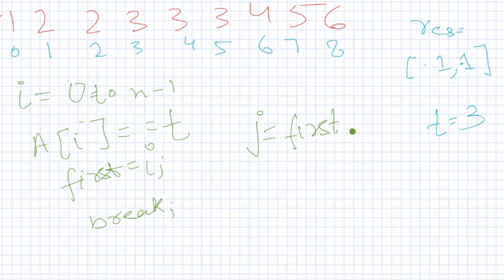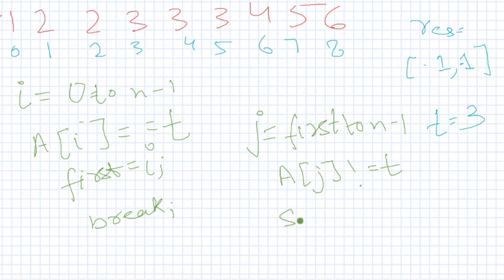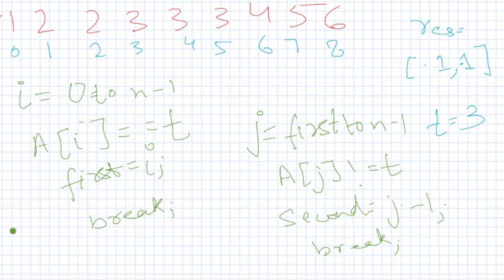In this second loop, iterate from 'first' to n-1. As soon as you find that a[j] is not equal to target, that means we hit a discontinuation, so result[1] = j - 1. Set result[0] = first, and return the result.